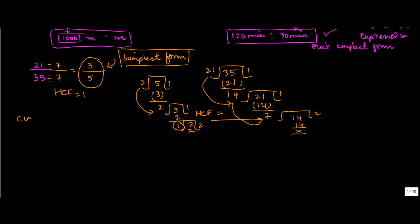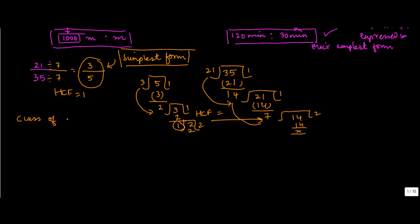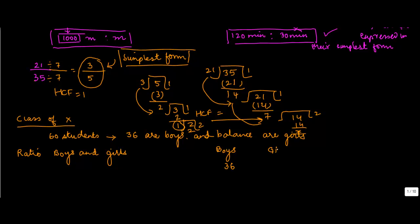Let us say in a class of 10th there are 60 students, and out of these 60 students 36 are boys and balance are girls. So suppose I were to ask you what is the ratio of boys and girls. Now out of 60 students the boys are 36, hence the girls are how many? 60 minus 36 or 24.